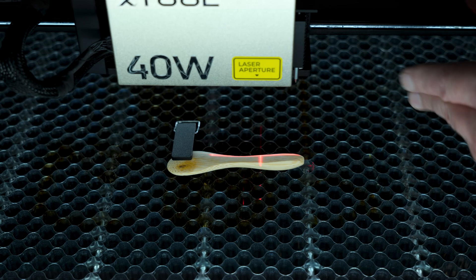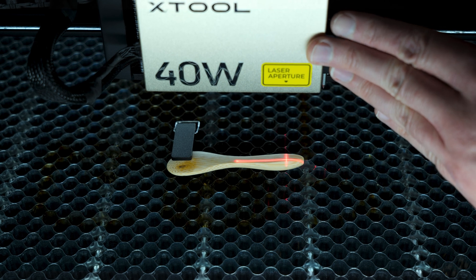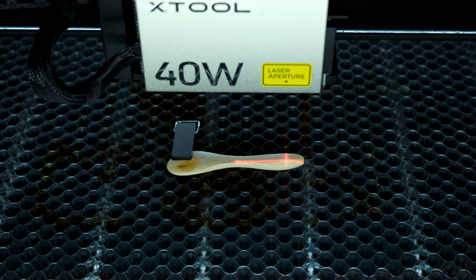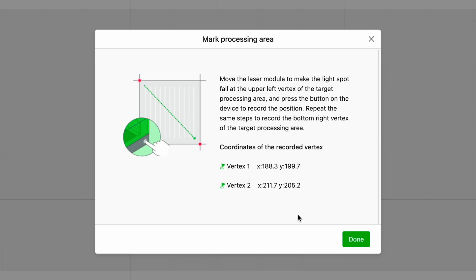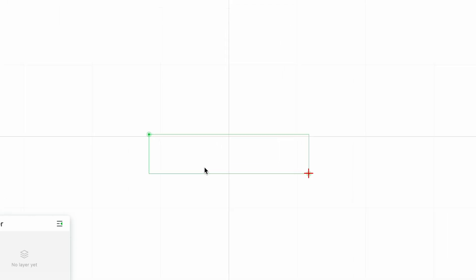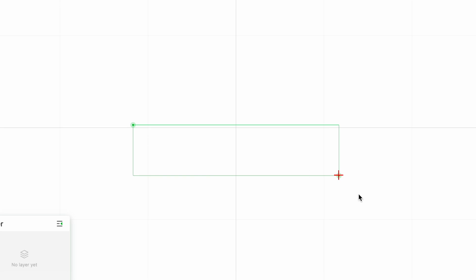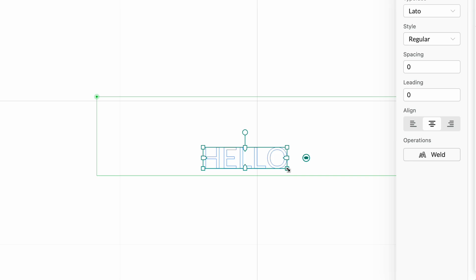Now for Vertex 2, we are going to move this and click the power button again. And now it is completely done. And what you will see here is a little box, and this is the complete processing area. How cool is this?